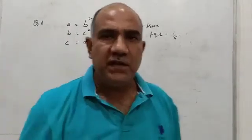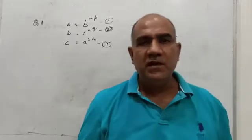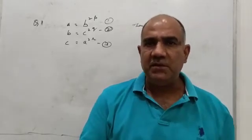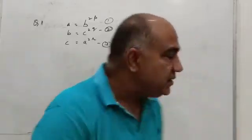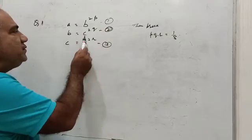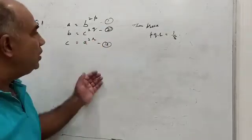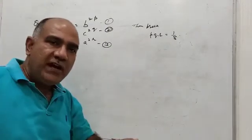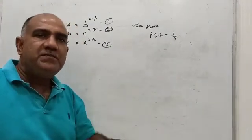Hello students, we are going to see a question from Number System, Chapter 1 in Class 9 Mathematics. The question is: if a = b^(2p), b = c^(2q), and c = a^(2r), then prove pqr = 1/8. In two stages by substitution we...